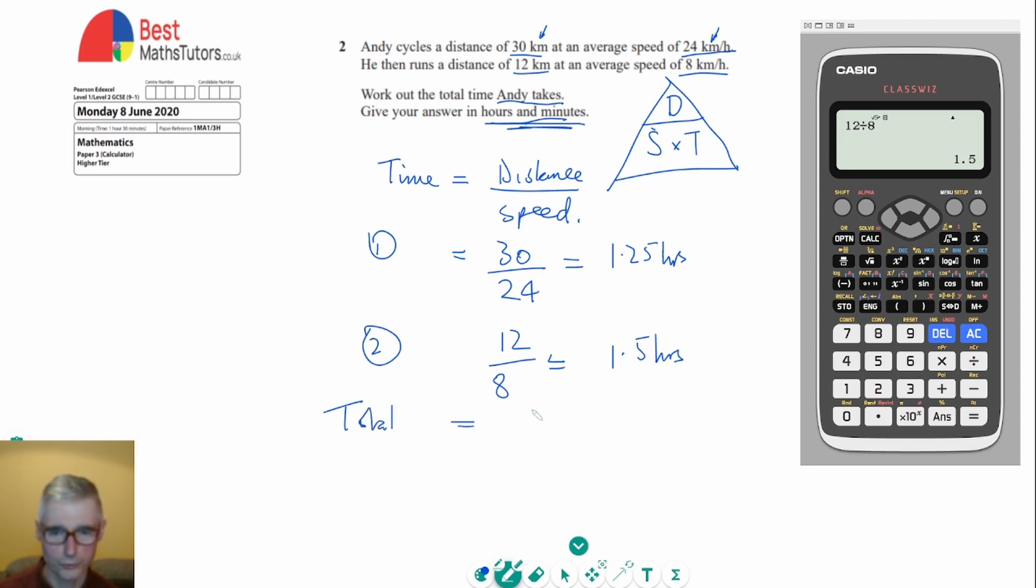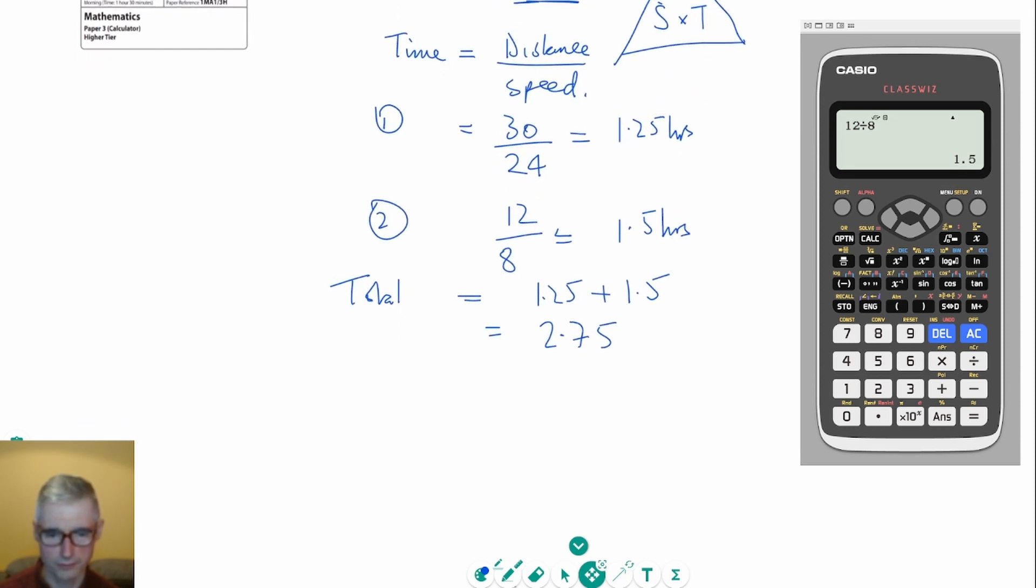The total equals 1.25 plus 1.5, which gives 2.75 hours. The first part—the bit in front of the decimal—is 2 hours.